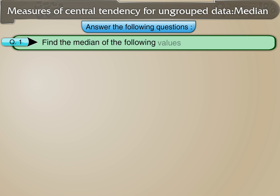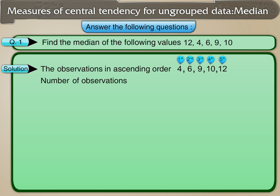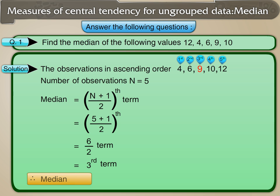Find the median of 12, 4, 6, 9, and 10. In ascending order: 4, 6, 9, 10, 12. The number of observations n equals 5. Since n is odd, the median is the (n+1)/2 th term, which is (5+1)/2 equals 6/2 equals the 3rd term. Since the 3rd term is 9, the median is 9.